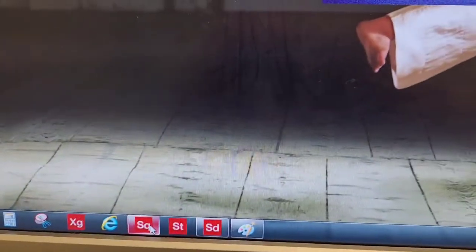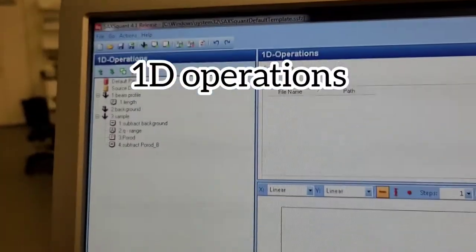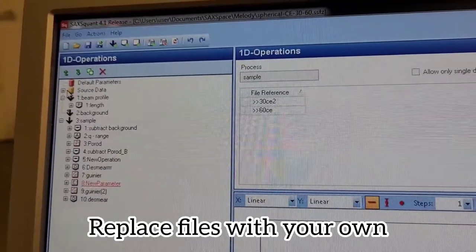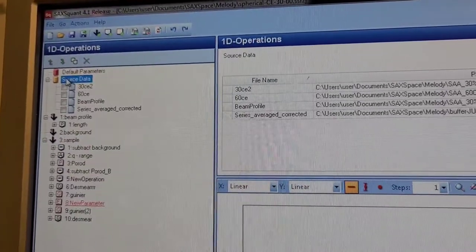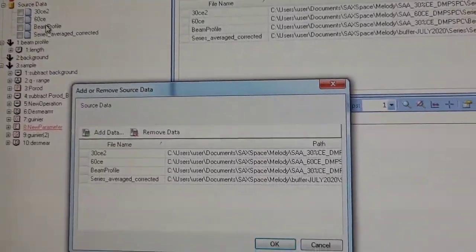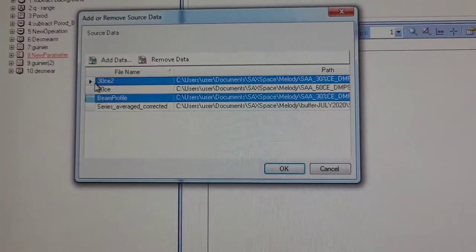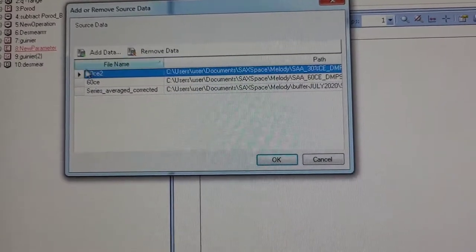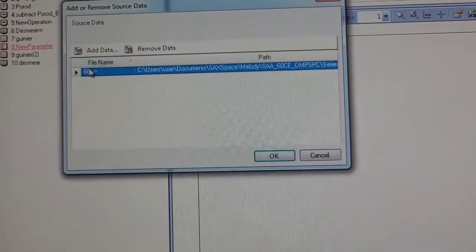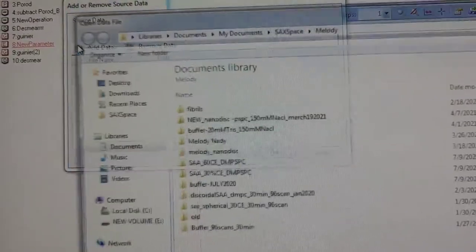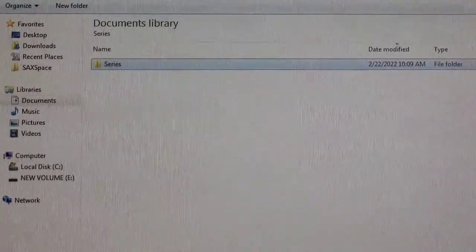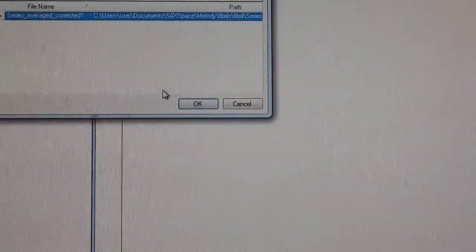Then you open SAXSQuant Software. Go to 1D Operations. Unless you're the first person that is doing this, somebody should have a processing file from before. So it's easier to open something from the past. Then you will delete the sample information and the buffer and everything that they loaded. Remove data from that file and then you add the data from what you just acquired. Your sample file and your buffer file, and these should be a PDH file.